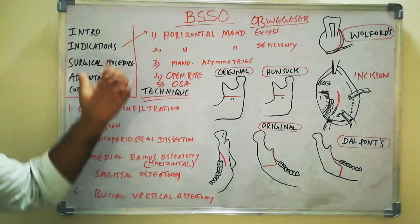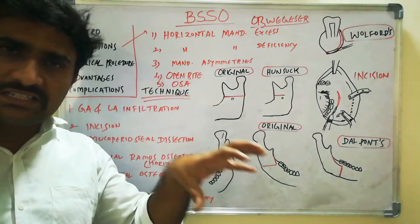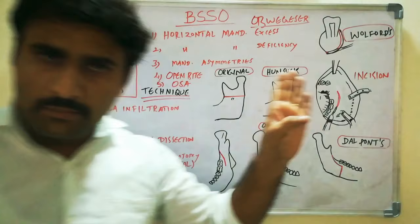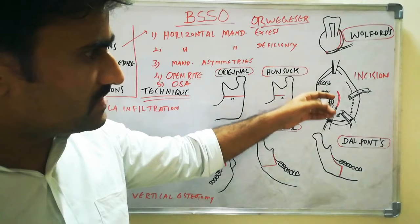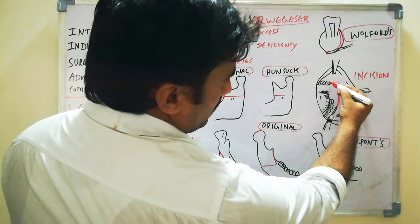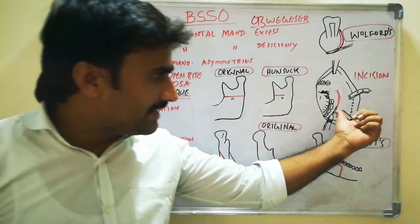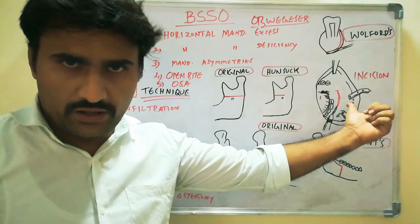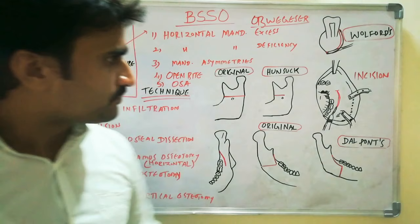Coming to the surgical technique: BSSO is generally done under general anesthesia, with some local anesthesia infiltrated at the incision site. The incision is made just lateral to the external oblique ridge. The superior extent is midway between the maxillary and mandibular molars, and the inferior extent is within the buccal vestibule, approximately between the first and second molar. When giving this incision, retract the tissues laterally.